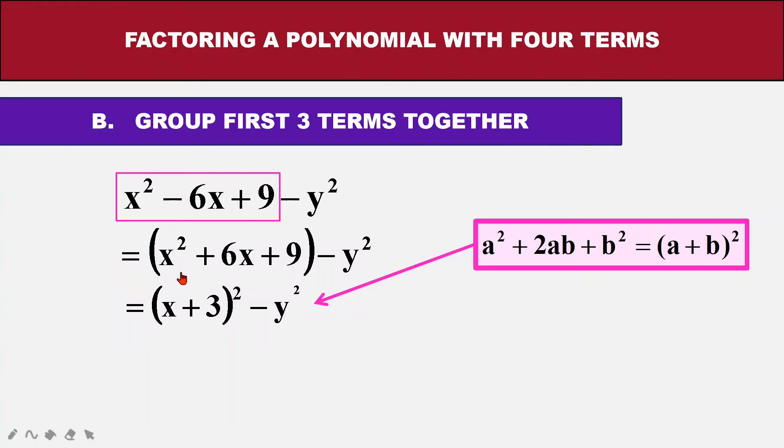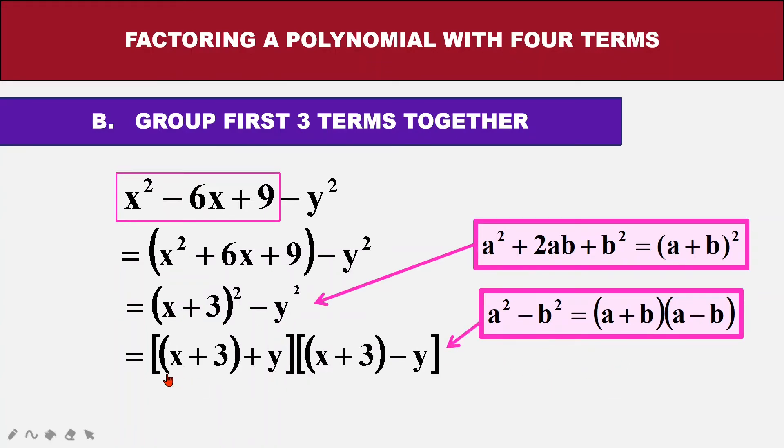Next thing is, I see a squared here minus another squared, so I will think about this formula, A squared minus B squared. So the A, the part for A is X plus 3, the part for B is Y. So I will change it into this position. So once that is done, actually I have already factored this equation.